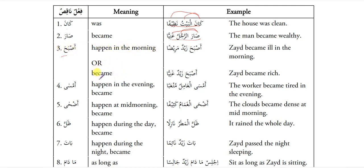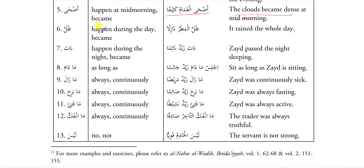Asbaha means 'happen in the morning' or 'became.' Asbaha za'idun marizan — Zayd became ill in the morning. Asbaha za'idun ghaniyan — Zayd became rich. Za'idun is asbaha's ism and marizan is asbaha's khabar. Amsa means 'happen in the evening' or 'became.' Azha means 'happen at the mid-morning.' Azhal ghamamu kasifan — the clouds became dense at the mid-morning. Zalla means 'happen during the day.' Zallal mataru nazilan — it rained the whole day. Baata: happened during the night. Baata za'idun na'iman — Zayd passed the night sleeping.